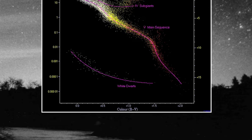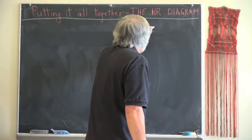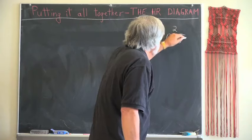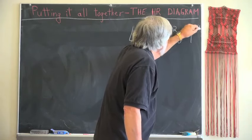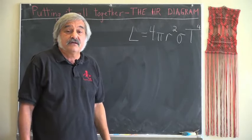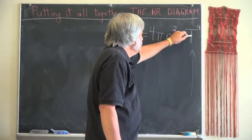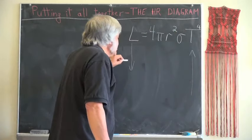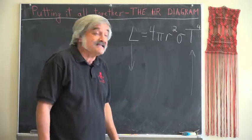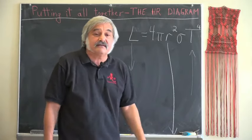How do we know this? Well, we remember our old friend, luminosity equals the surface area of a star times a constant times the temperature of the star to the fourth power. The Stefan Boltzmann law. T is very, very high. But we know the luminosity is very, very low. The only way that this can come about is if the size is extremely small.